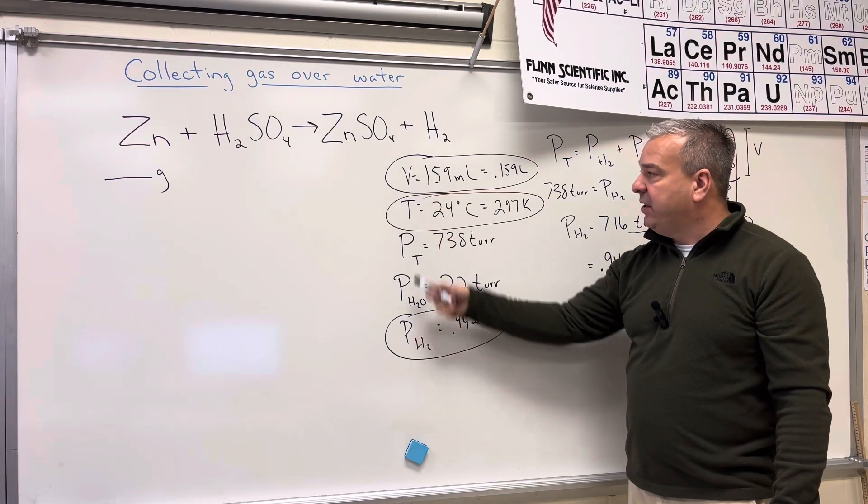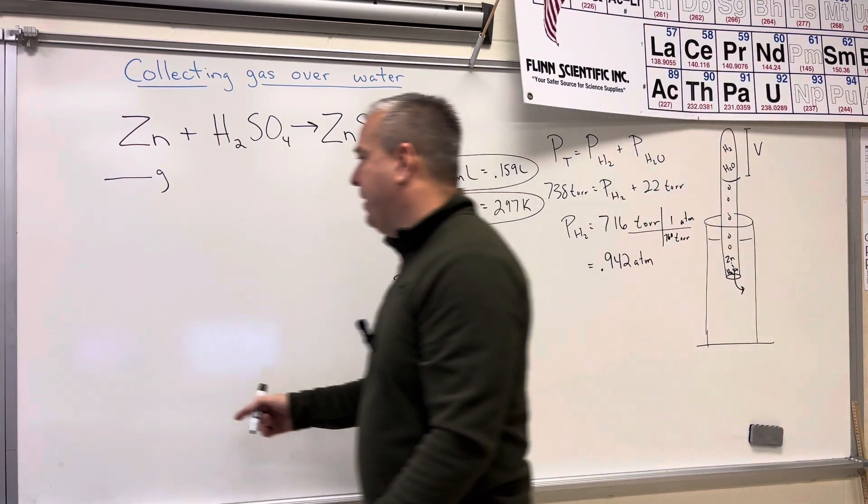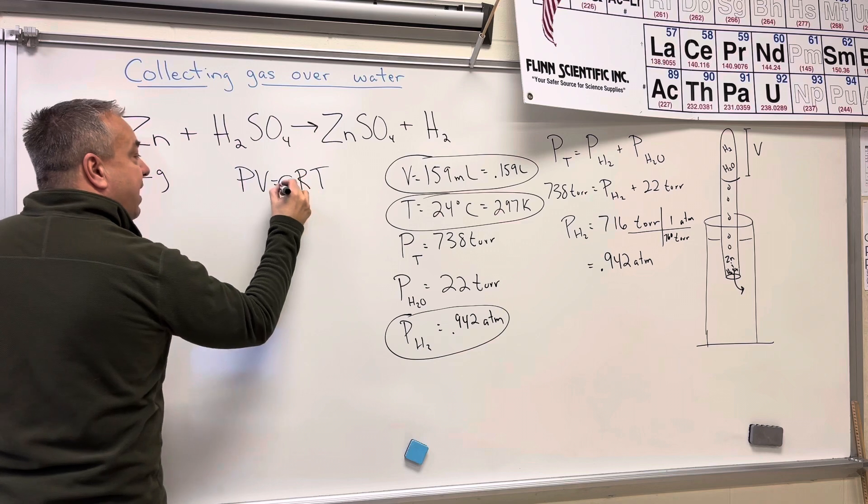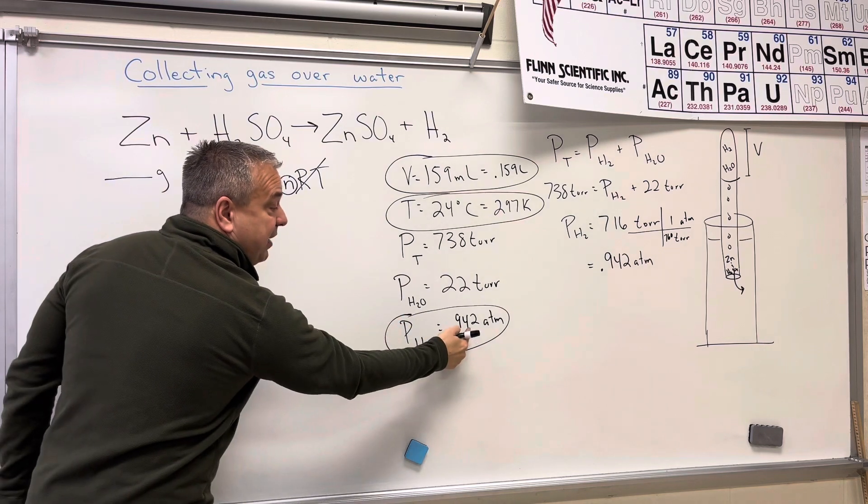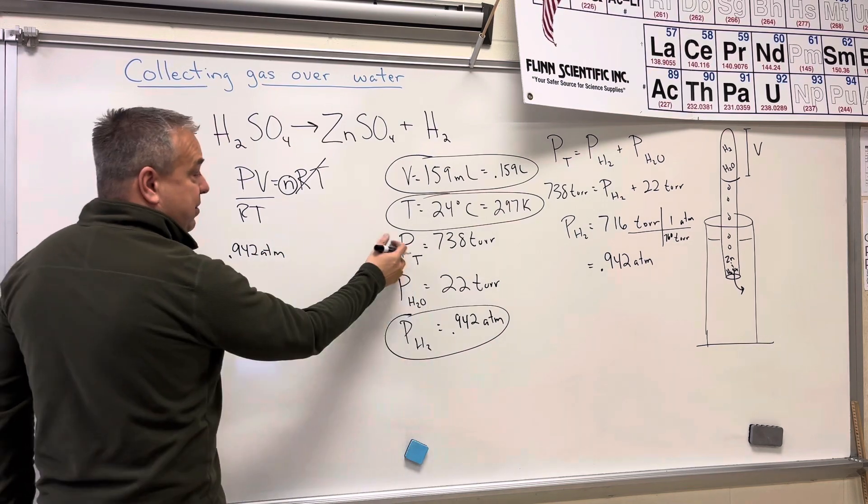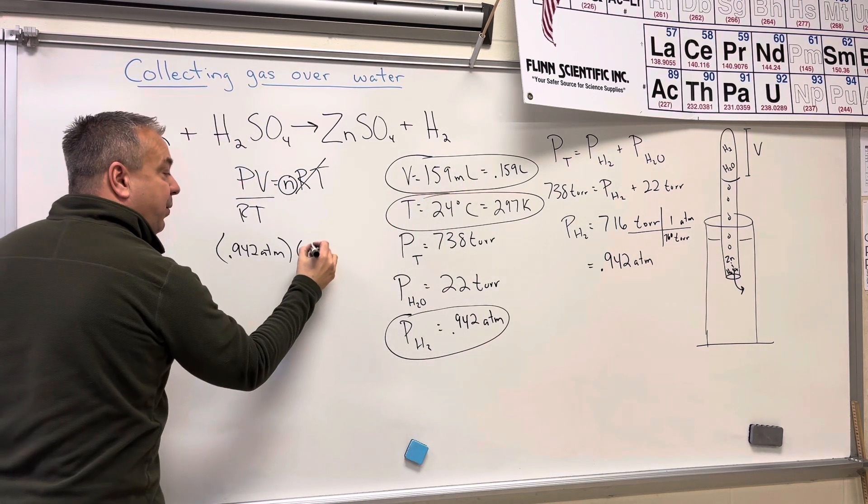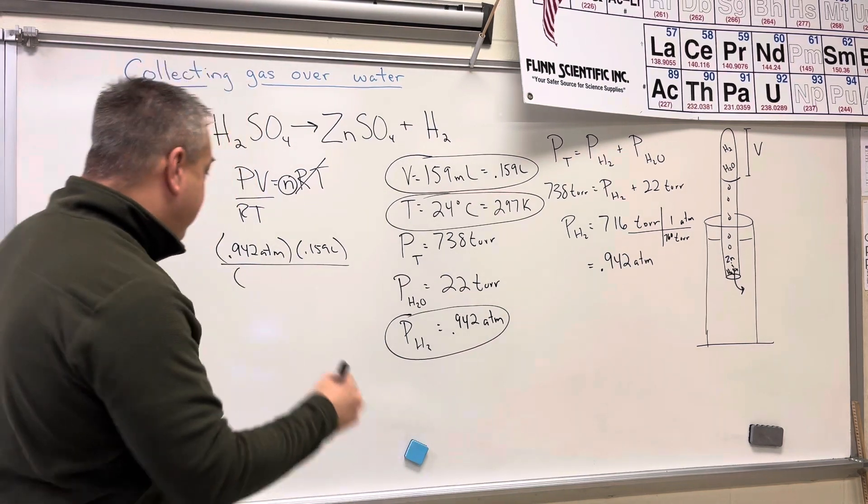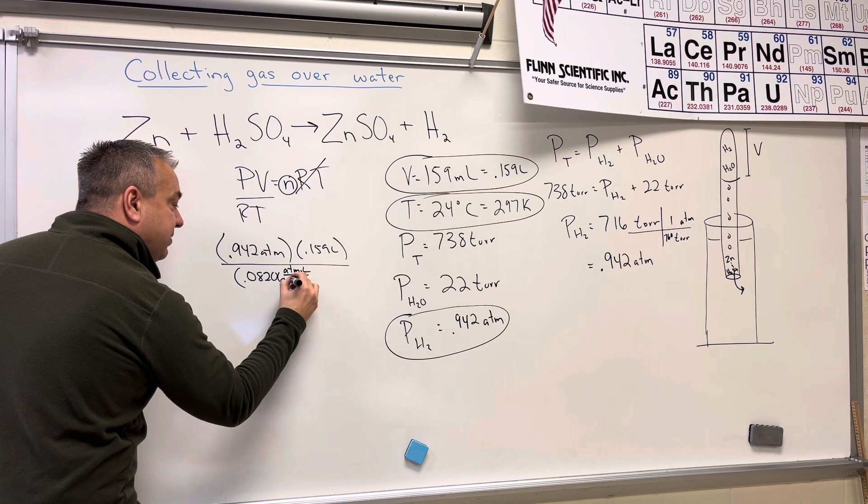So I'm going to use the pressure, the volume, and temperature of hydrogen to calculate the moles of hydrogen by using PV equals NRT. So PV equals NRT, and I'm solving for moles of hydrogen. So I divide by RT on both sides. The pressure of the hydrogen, remember you've got to use that 0.942 version. Don't use the pressure of the water. Don't use the total pressure. Pressure of the hydrogen times the volume of the hydrogen, 0.159 liters, divided by R, which is a number you either memorize or get off a reference sheet. That's equal to 0.08206 ATM liters over mole Kelvin.